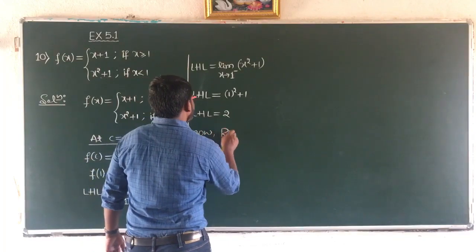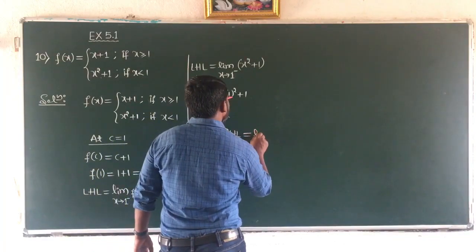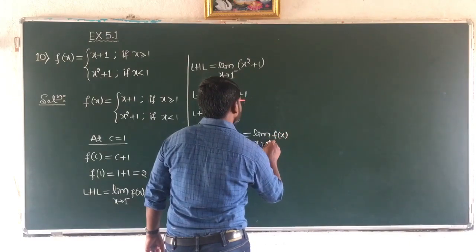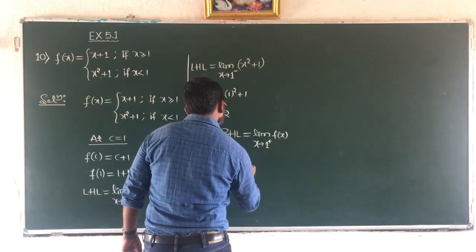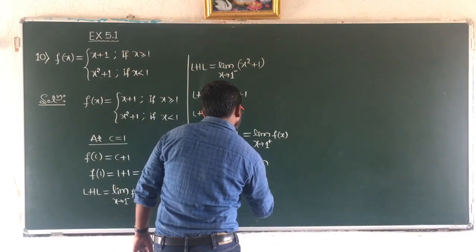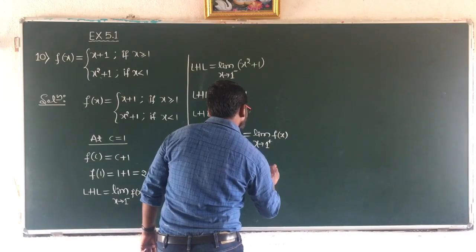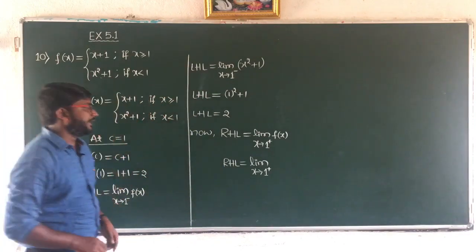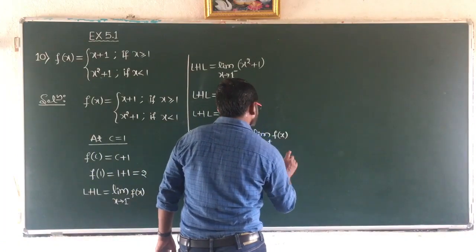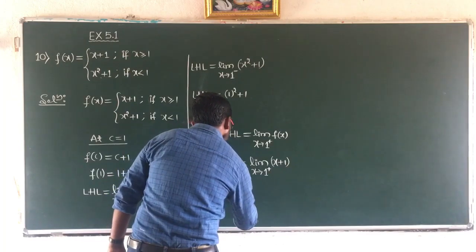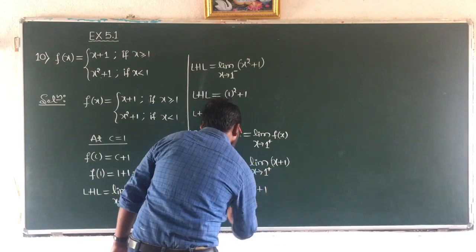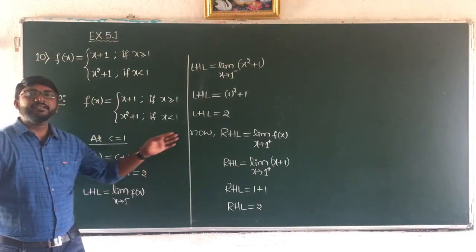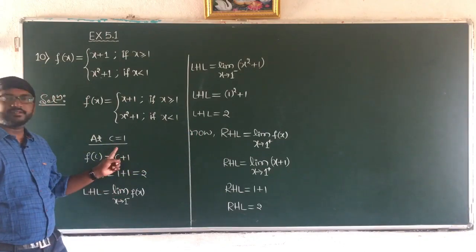RHL equals limit as x tends to 1 plus of f(x). Since 1 plus means greater than 1, the function is x plus 1. Applying the limit, 1 plus 1 gives RHL equal to 2. LHL, RHL, and the value of the function all three coincide, so the function is continuous at c equal to 1.